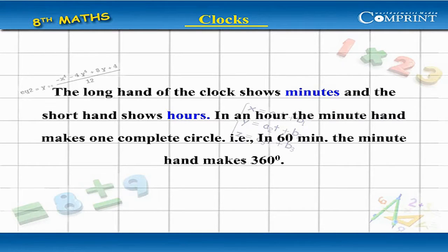The long hand of the clock shows minutes and the short hand shows hours. In an hour, the minute hand makes one complete circle.